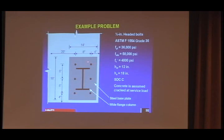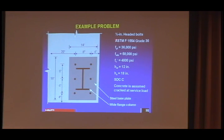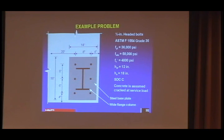As an example: a group of six half-inch headed bolts. The yield strength of the material is 36 KSI, the tensile strength is 58 KSI. Those numbers can be read from a table in Chapter 34 of PCA's notes on ACI 318, which is a pretty handy source. Concrete strength is the usual 4 KSI. The embedment depth is 12 inches.